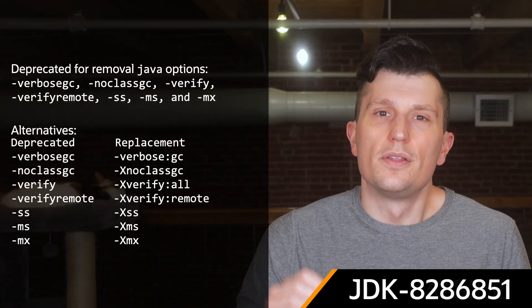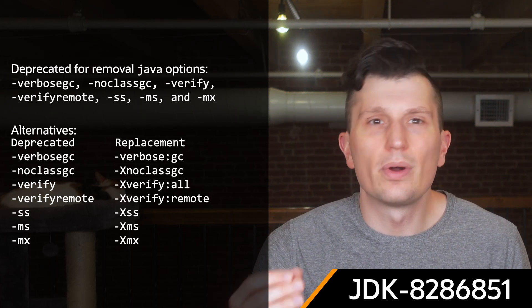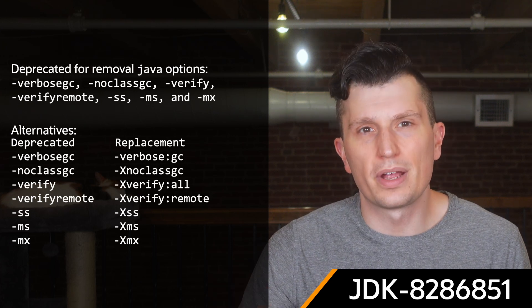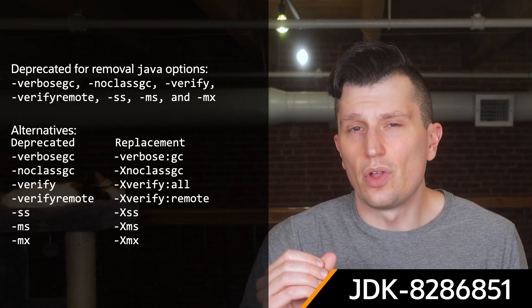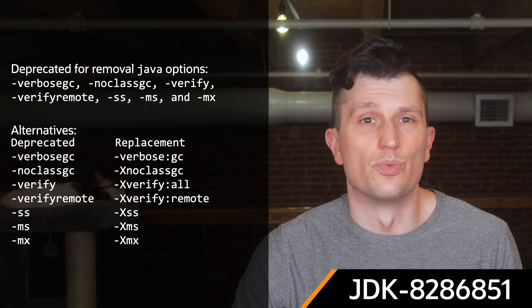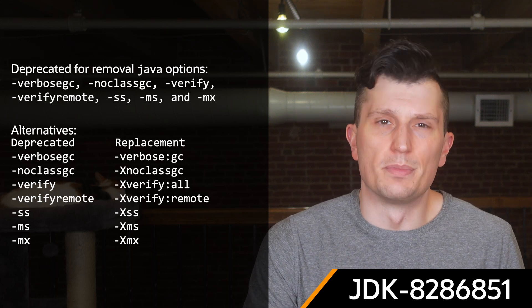The new lightweight locking mechanism for object monitor locking, introduced in JDK 21 under JDK-8291555, is now the default — known as LM-Lightweight. Check the JBS issue for more details. With all 32-bit x86 ports slated for removal, the architecture-agnostic zero port would be the only remaining way to run Java on 32-bit x86 processors going forward. The verbose:gc, -noclassgc, -verify, -verify:remote, -ss, -ms, and -mx options of the Java command are deprecated for removal, and usage will now log a deprecation warning. A migration chart shows replacement options for some of these arguments.